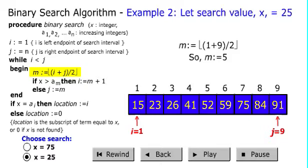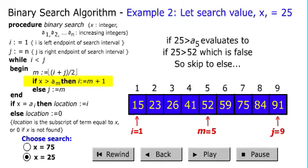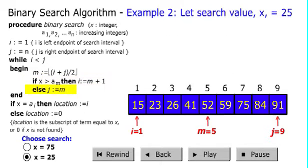We get the midpoint, which is going to be 5, which is 1 plus 9 divided by 2. We're going to see if 25 is greater than a sub 5, which is 52. It's false. So, now we work with the lower half of the array. j becomes 5.